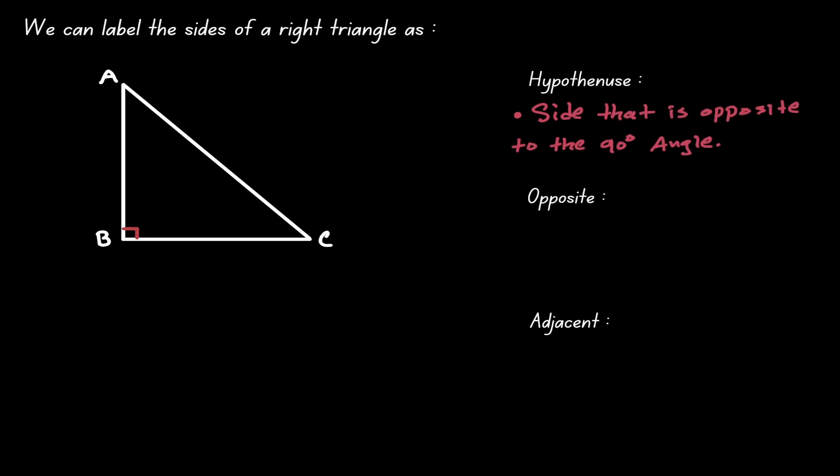So given the triangle on the left, notice that angle B has the notation for our right angle, that is our 90 degree angle, and the side that is opposite to angle B, in this case that will be AC, we will be labeling this as our hypotenuse.